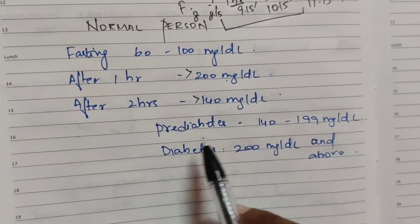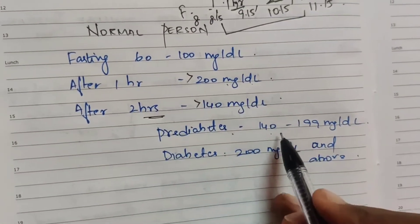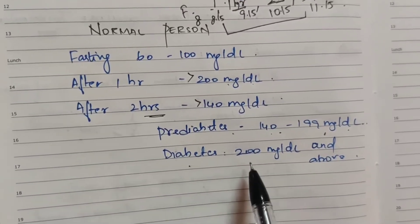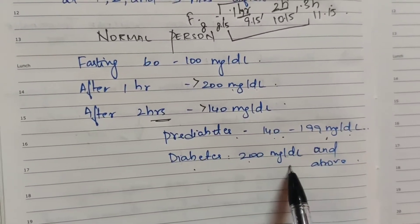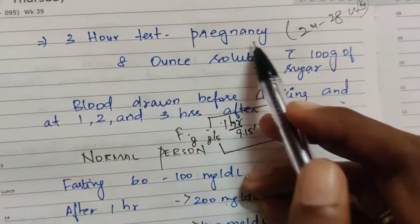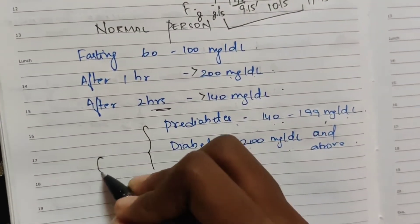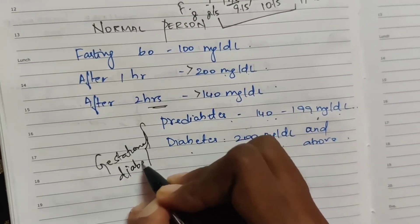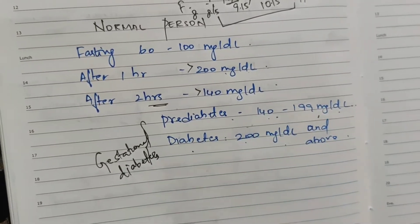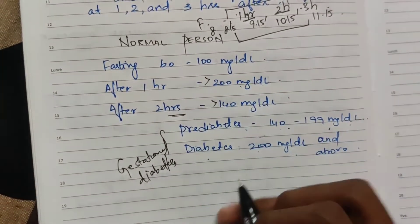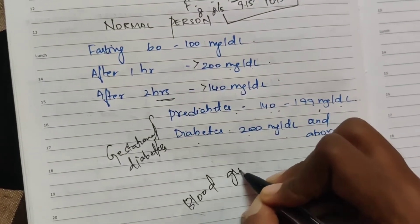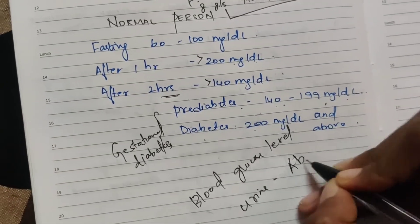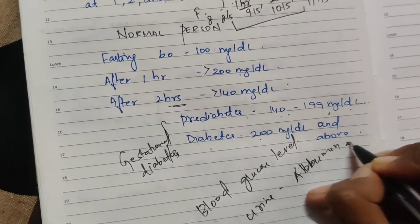If you have pre-diabetes, blood glucose will be 150–199 mg/dL, and diabetes is diagnosed above 200 mg/dL. For gestational diabetes, blood glucose levels are also checked along with urine and protein levels.